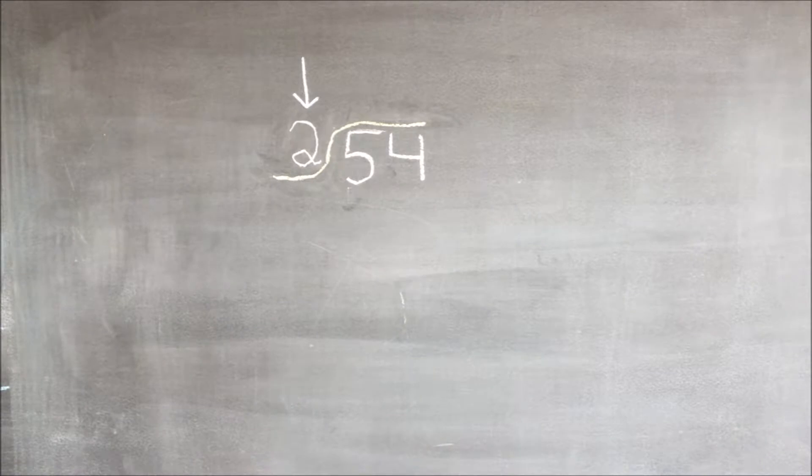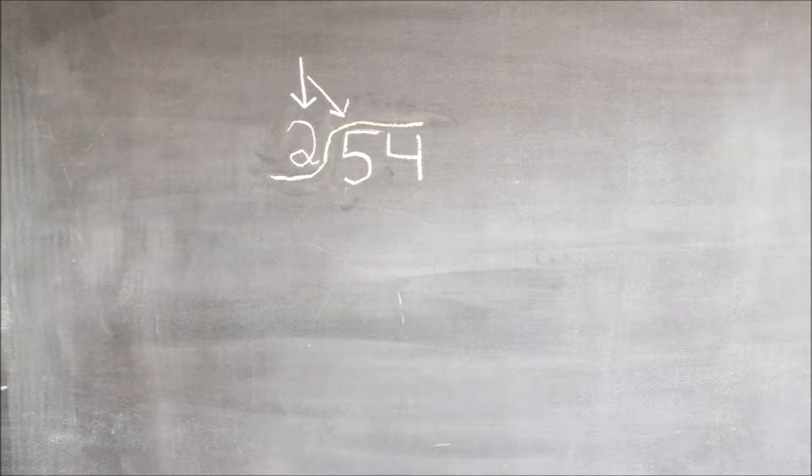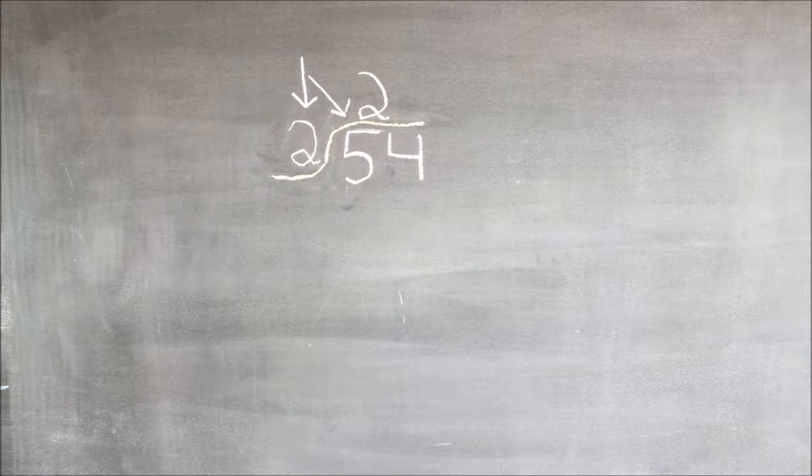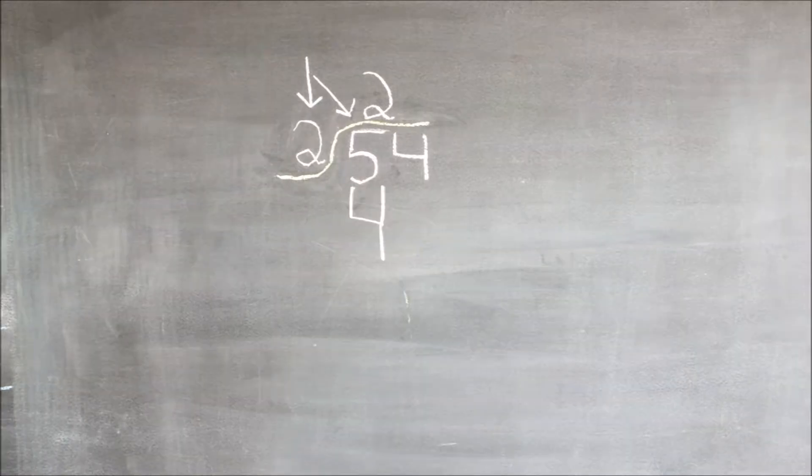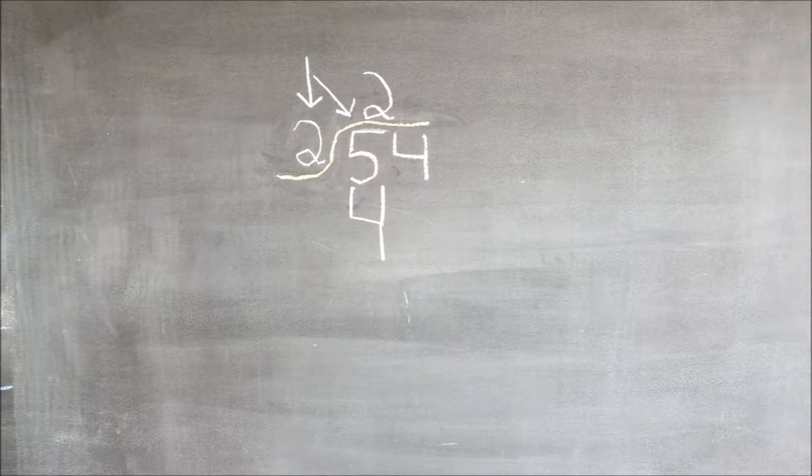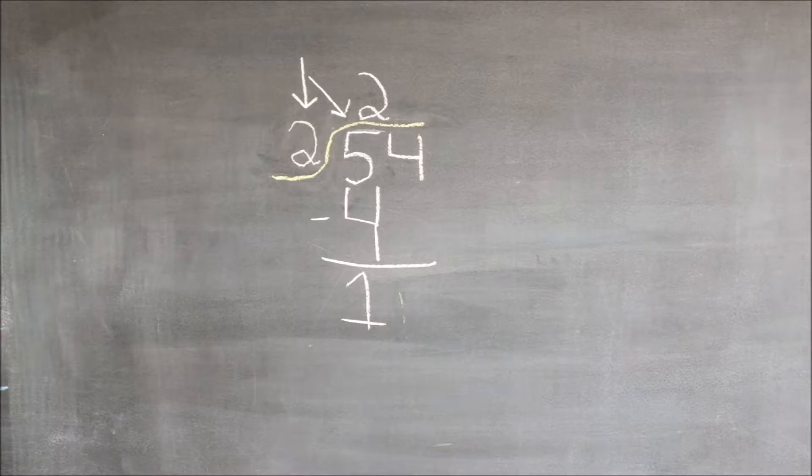First we will see how many times two goes into five. That's right, two goes into five two times, and then we do two times two which equals four, and then we write the four underneath that five. We then subtract four from five and get one.